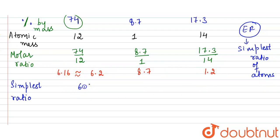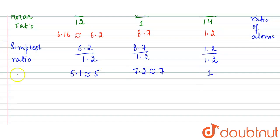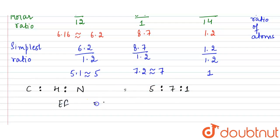The smallest molar ratio is 1.2, so we divide each by 1.2: 6.2/1.2 gives 5.1 ≈ 5 for carbon, 8.7/1.2 gives 7.2 ≈ 7 for hydrogen, and 1.2/1.2 gives 1 for nitrogen. So the ratio is carbon : hydrogen : nitrogen = 5 : 7 : 1.